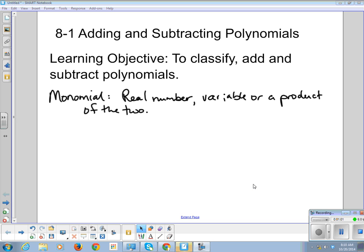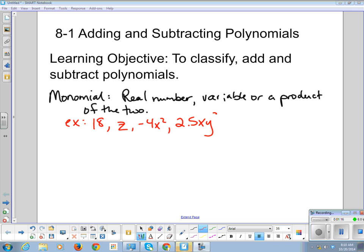Let me give you some examples: 18, Z, negative 4X squared, 2.5XY to the third, and A over 3. All of these items, each one individually, is a monomial.